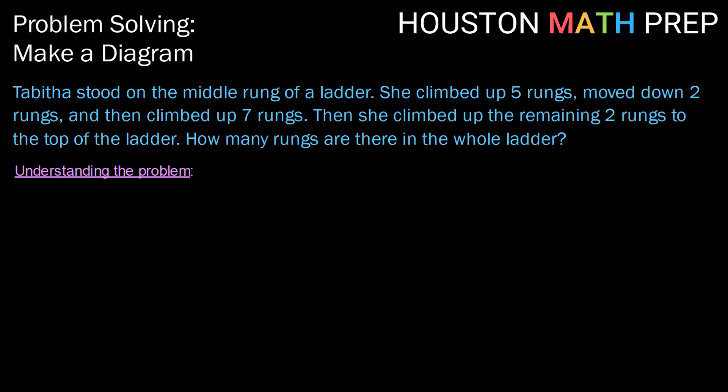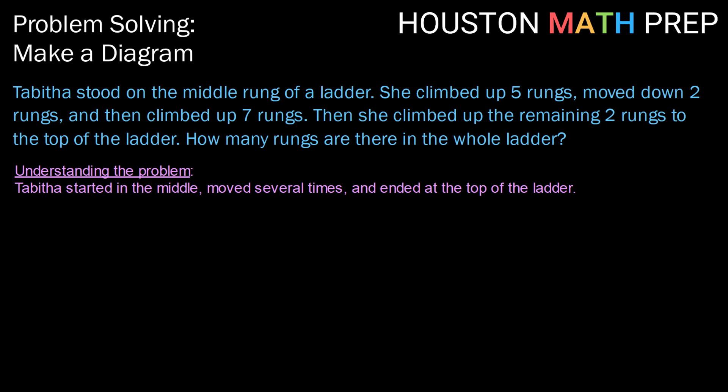So we want to start by making sure that we understand the problem. We know Tabitha started in the middle of the ladder, she moved several times in different directions, and she ended at the top of the ladder. We want to find out how many rungs the ladder has.